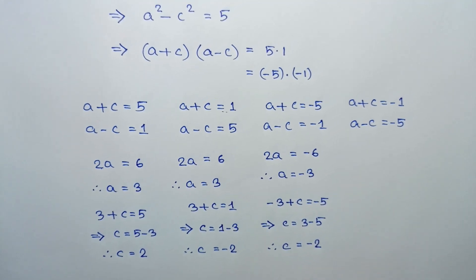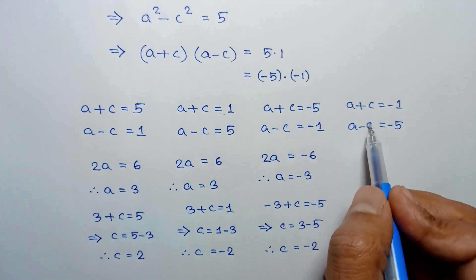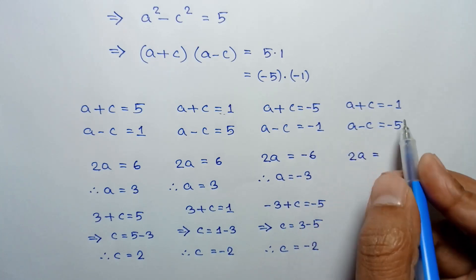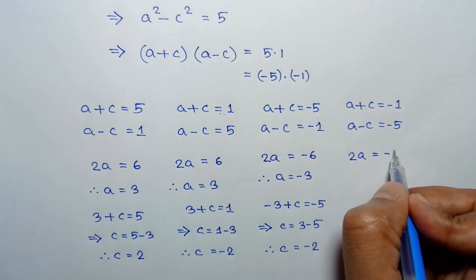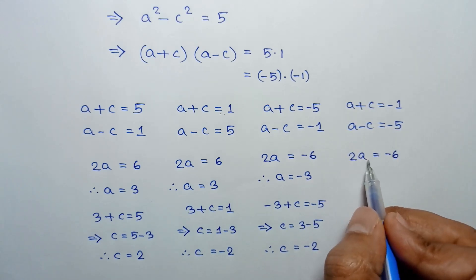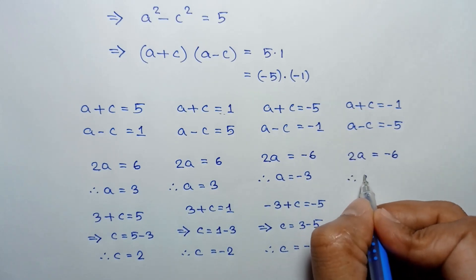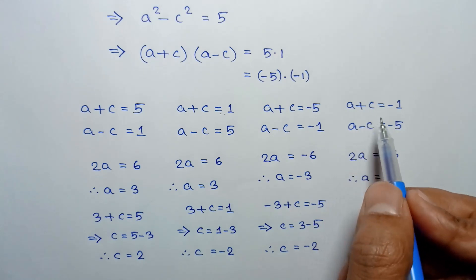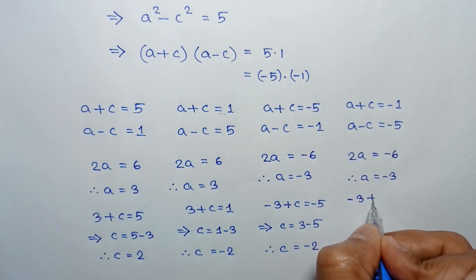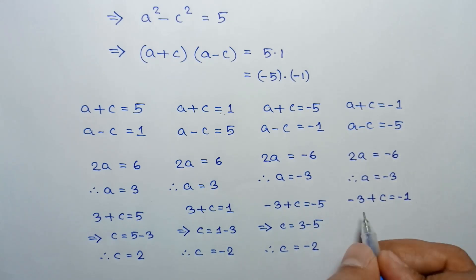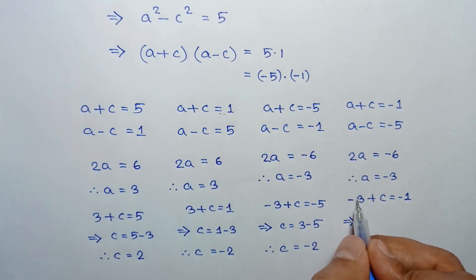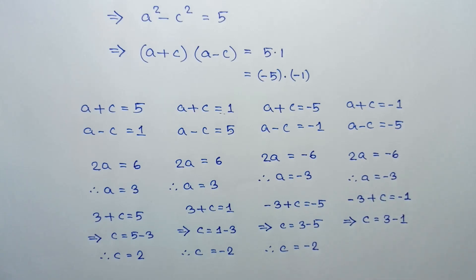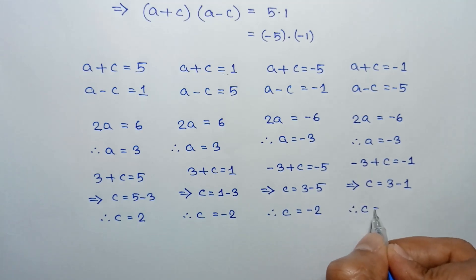For Case 4, adding a plus c equals negative 1 and a minus c equals negative 5: the c terms cancel, giving 2a equals negative 6, so a equals negative 3. Substituting a equals negative 3 into a plus c equals negative 1, we get c equals negative 1 plus 3, so c equals 2.